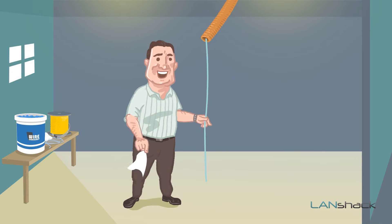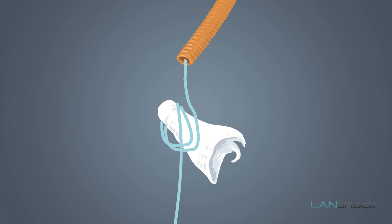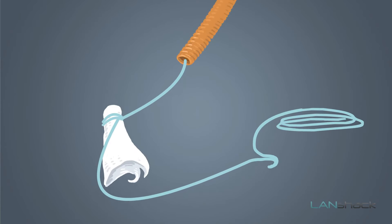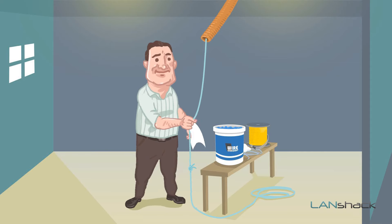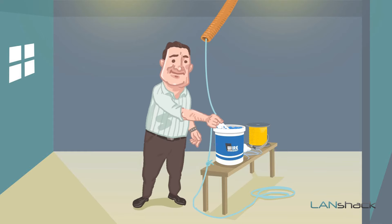Now that we have the string in place, attach the rag and then create another knot by tying this string to another segment of pull string and then dip the rag into the wire lubricant.